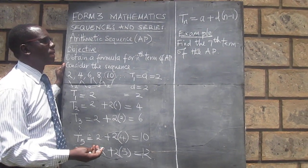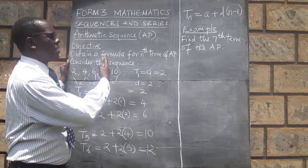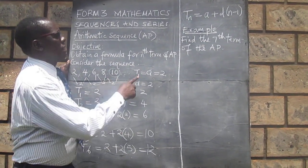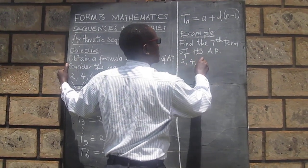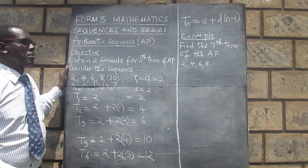And that's why we are calling them either progression because there is an increase. Because of the common difference, there seems to be an increase. By the way, there can also be a decrease. So, 2, 4, 6, 8, and the solution, we identify the first term.